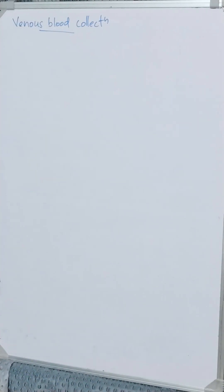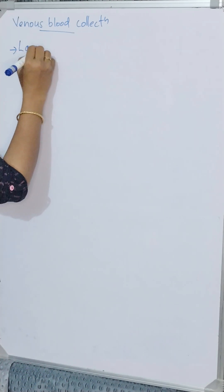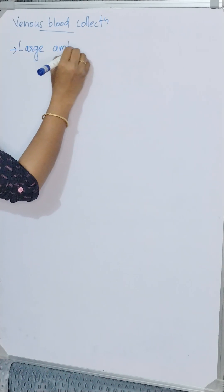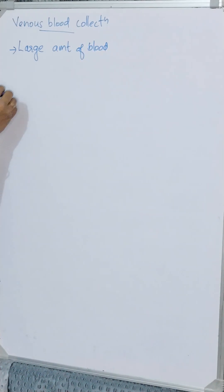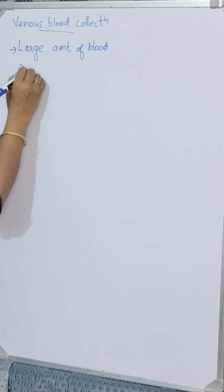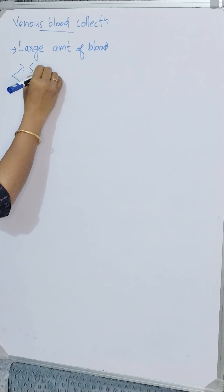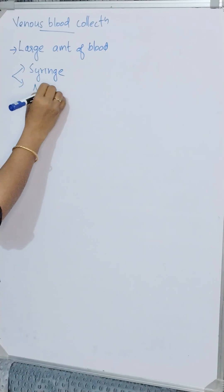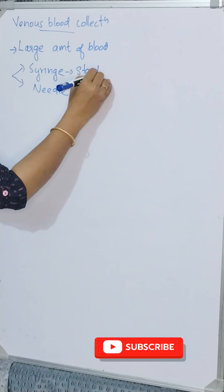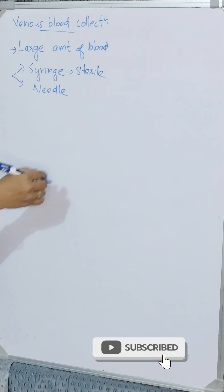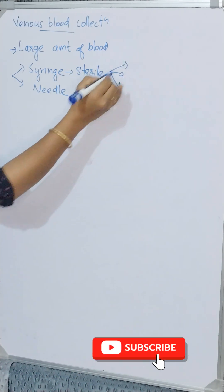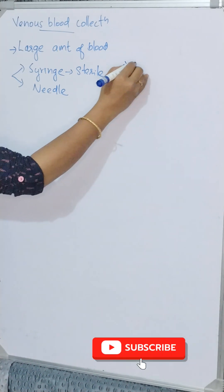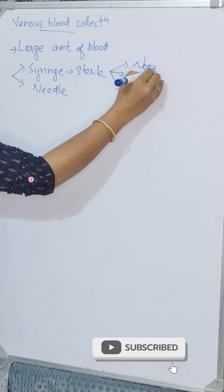Venous blood collection method is adopted when a large amount of blood is needed. The sample is collected using a sterile syringe and a disposable needle. The size of the syringe is selected according to the amount of blood required, and its parts include the nozzle, barrel, and piston.